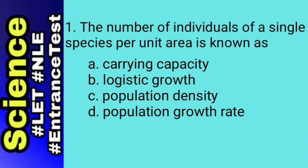Letter B, logistic growth is the ability of populations to grow exponentially. It occurs when a population's growth slows and then stops following a period of exponential growth. Letter C, population density refers to the number of individuals per unit area.